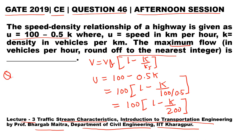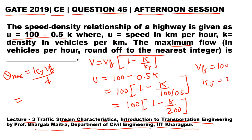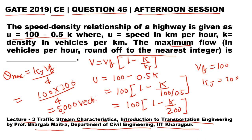The formula for maximum flow is q_max = kj × vf / 4. Comparing with the standard equation, we get vf = 100 and kj = 200. Therefore, q_max = (100 × 200) / 4 = 5000 vehicles per hour.